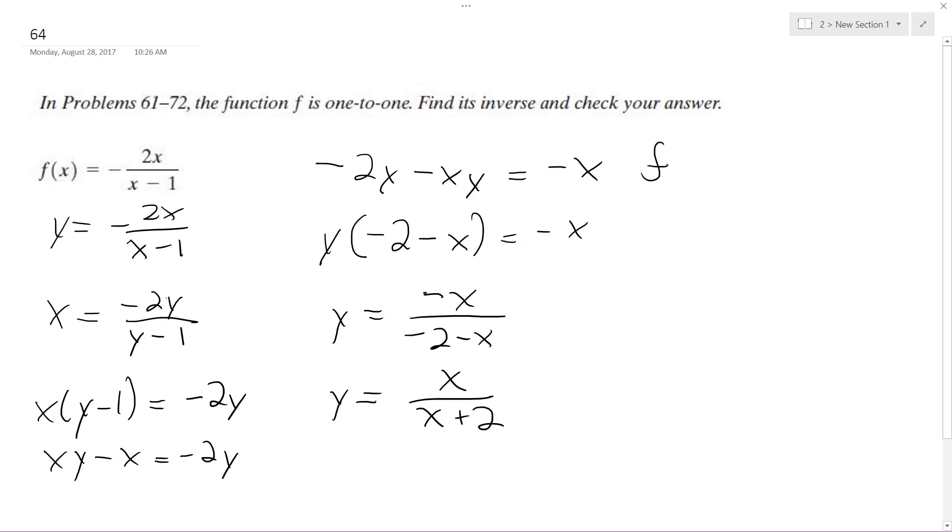All right, so let's check this, see if it's right. So we get f of f inverse of x. Negative 2 times quantity x over x plus 2 over x over x plus 2 minus 1.